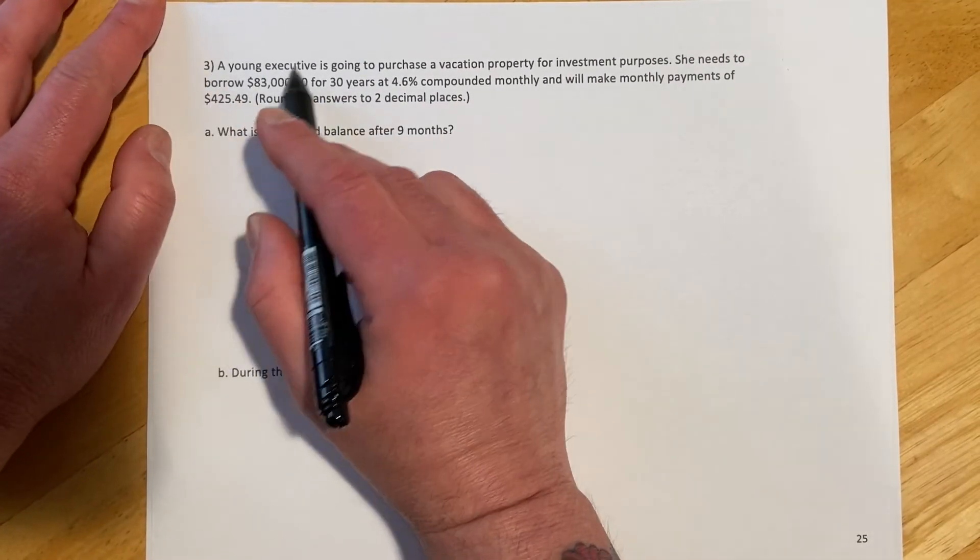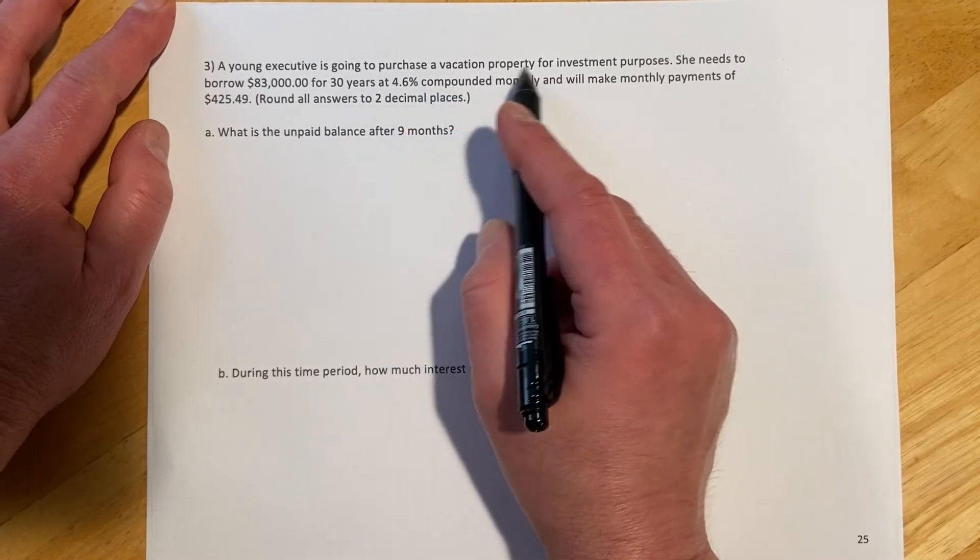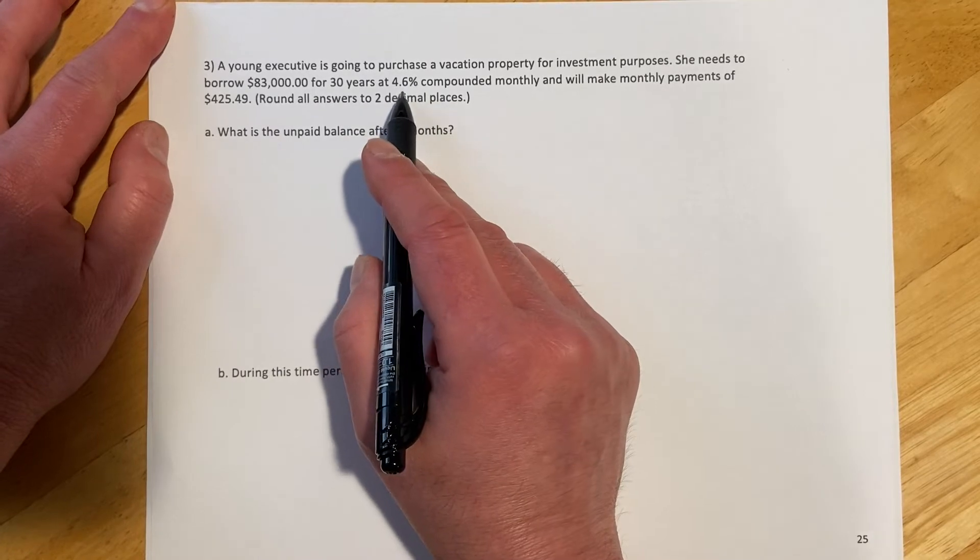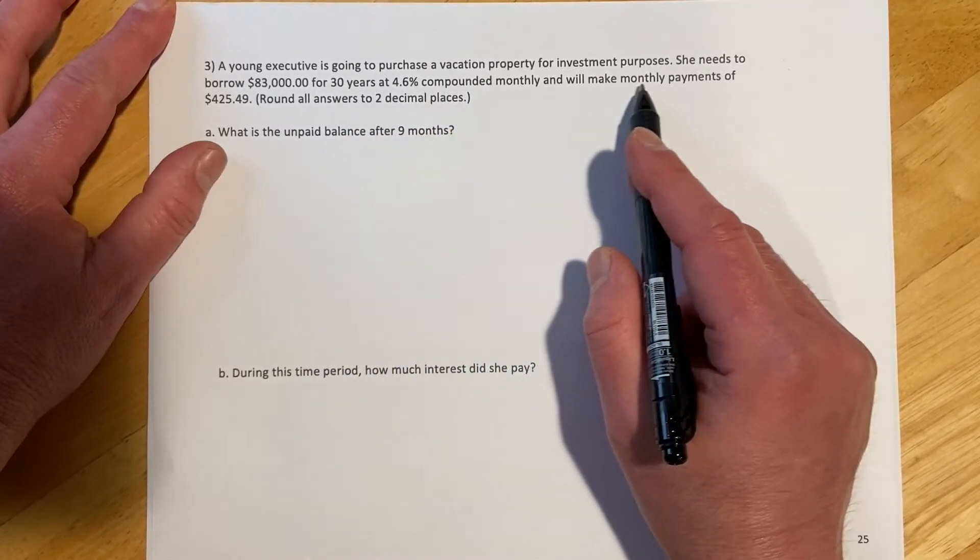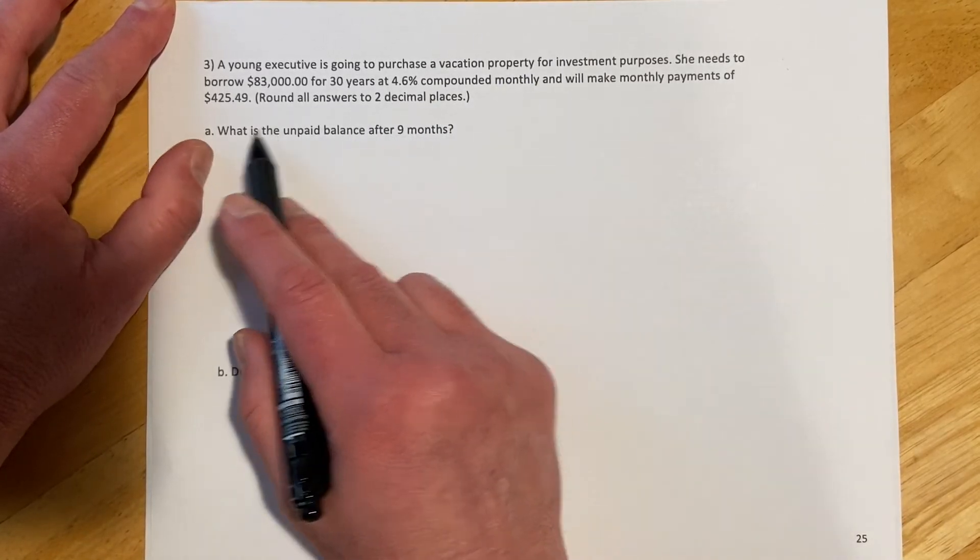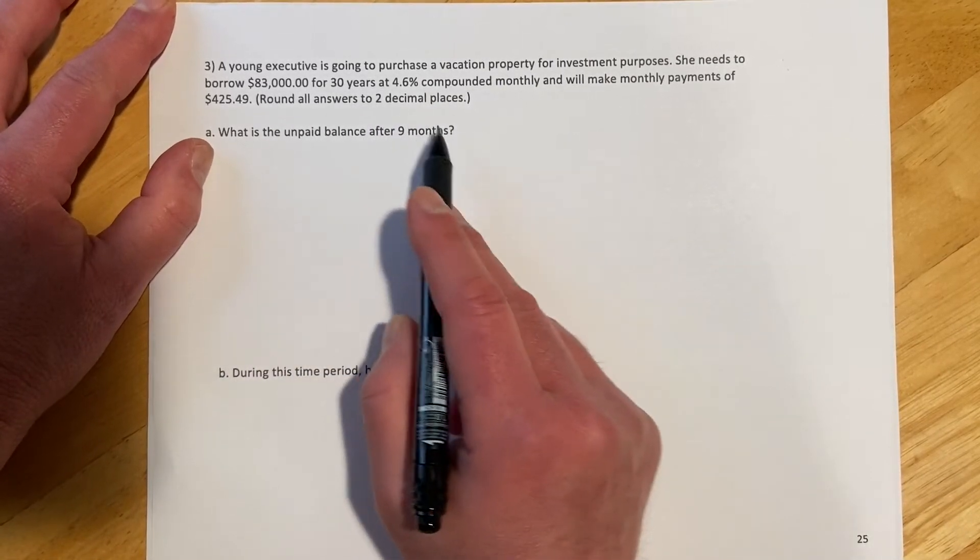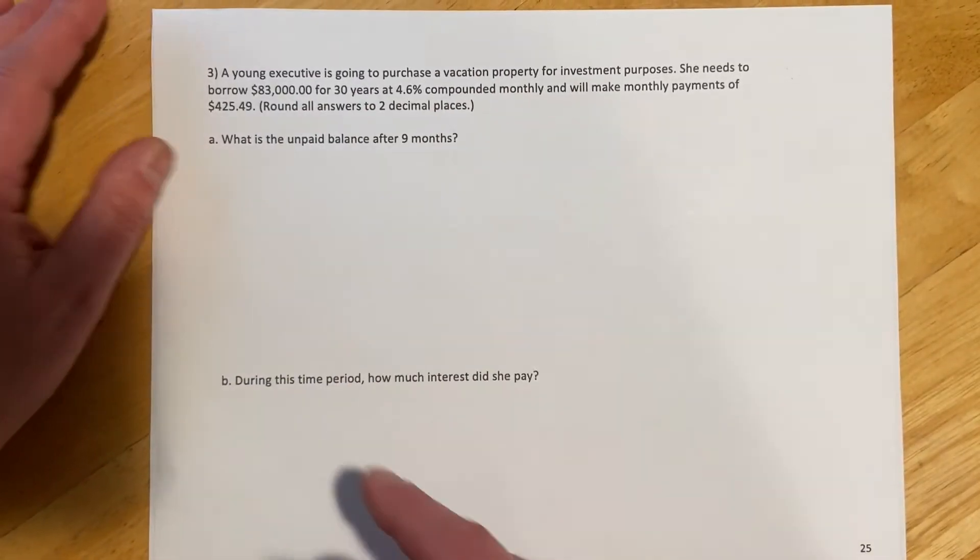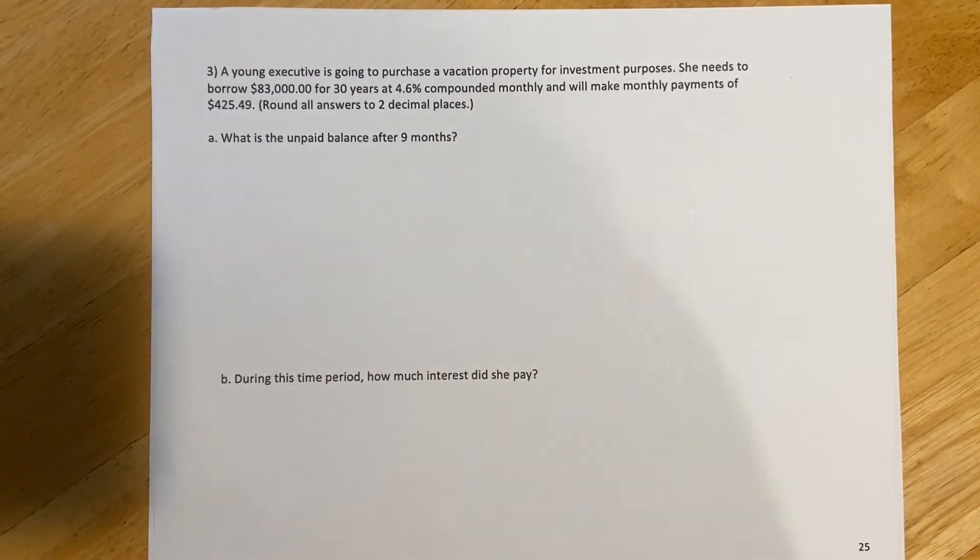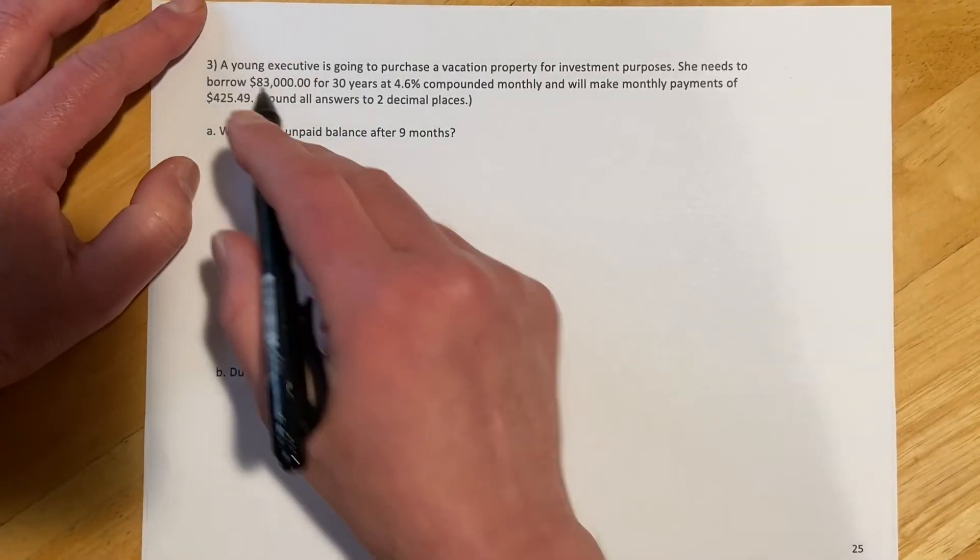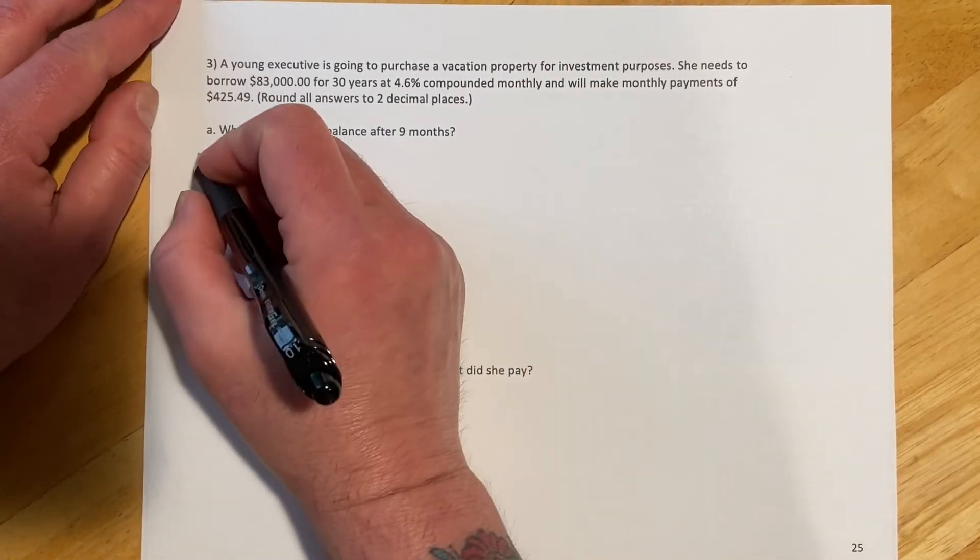Okay, so here we have a young executive is going to purchase a vacation property for investment purposes. She needs to borrow $83,000 for 30 years at 4.6% compounded monthly. And we'll make monthly payments of that much. And we're rounding everything to decimals. What is the unpaid balance after nine months? So she's going to take out this loan for this much money. And then nine months in, we want to see how much money she still owes on the loan. And it would be most of it, right? Because it's a 30-year loan.